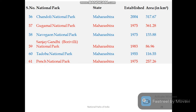Maharashtra has six national parks: Chandoli, Gugamal, Navegaon, Sanjay Gandhi (located in the Borivali sector of Mumbai), Tadoba, and Pench National Park.